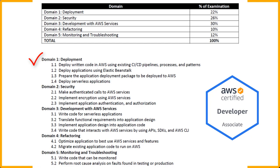Domain one is Deployment, which is about 22% of the examination. We'll be covering how to deploy written code in AWS using existing CI/CD pipelines — continuous integration and continuous delivery — which is really the concept of the entire DevOps lifecycle processes and patterns.